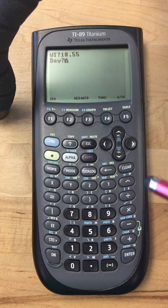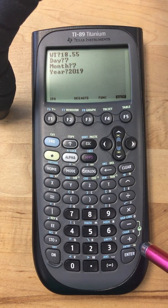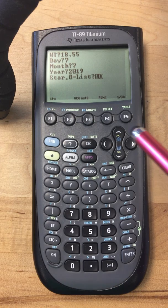So that watch time, that's 18 hours, 55 minutes. That's day 7, month 7, 2019, latitude.